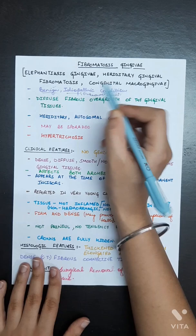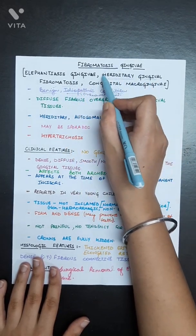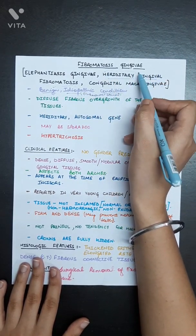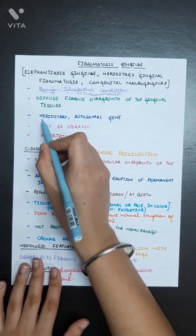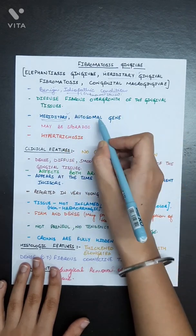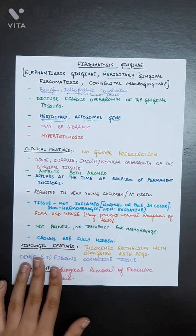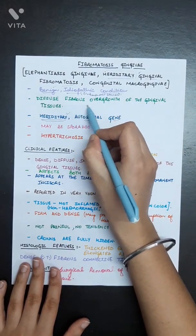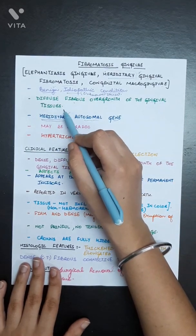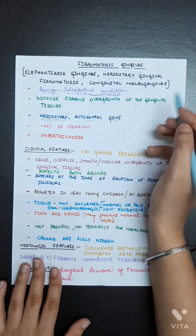Since its other name is hereditary gingival fibromatosis, the cause can be said to be hereditary. That's why we say it is basically hereditary in nature with autosomal gene. There will be a diffuse fibrous overgrowth of the gingival tissues. As the name suggests, fibromatosis, there will be a fibrous overgrowth of the gingival tissues.